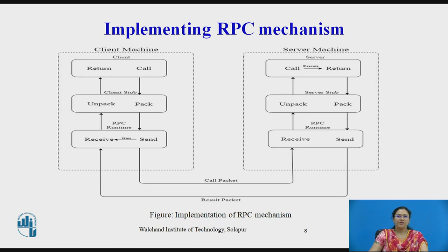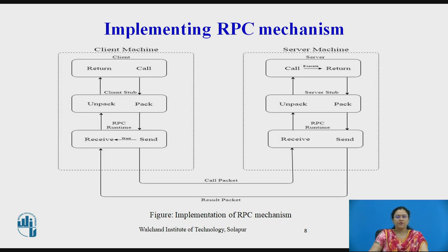Now we will see the implementing RPC mechanism in detail. There is a client side and a server side. The client is the user process which initiates an RPC call. To make an RPC, the client makes a perfectly normal call that invokes a corresponding procedure in the client stub. The client stub is responsible for two tasks: packing the target procedure and arguments, and also unpacking the result and passing it to the client. The RPC runtime handles transmission of messages across the network between client and server machines. It is also responsible for retransmission, acknowledgement, packet routing, encryption, etc.